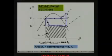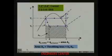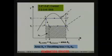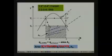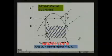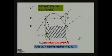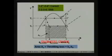What is the refrigeration effect of the standard cycle and what is the difference between these two? For the Carnot cycle 1, 2 double dash, 3, 4 dash, the refrigeration effect is nothing but the area under the curve 4 dash to 1 — this entire area. Whereas the refrigeration effect of the standard cycle is nothing but the area under process 4 to 1.